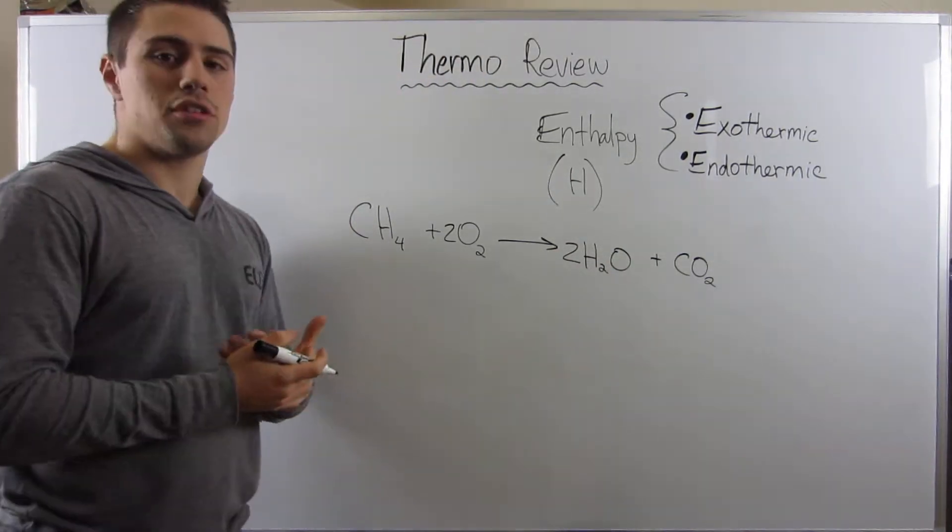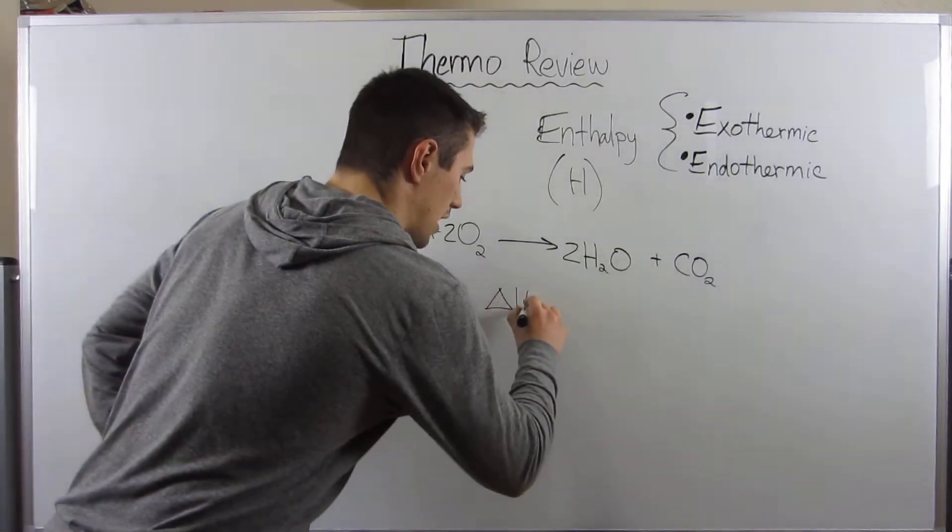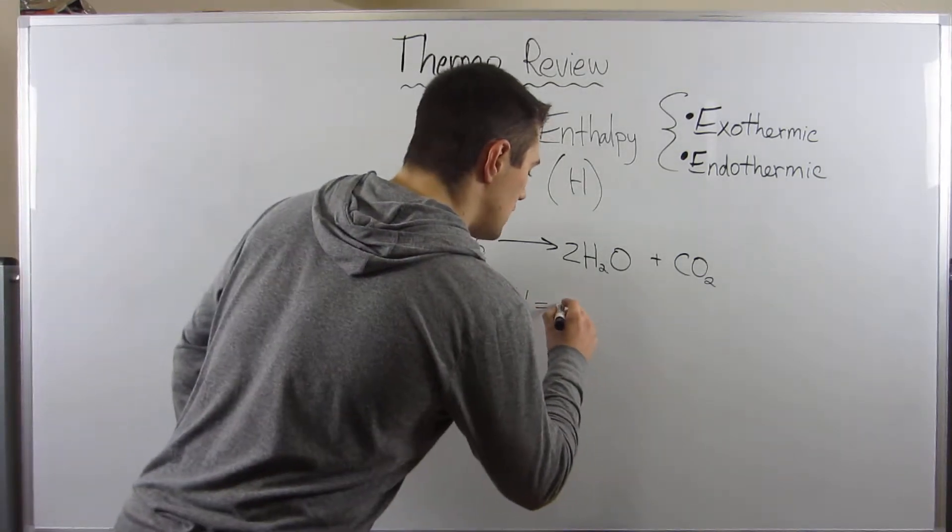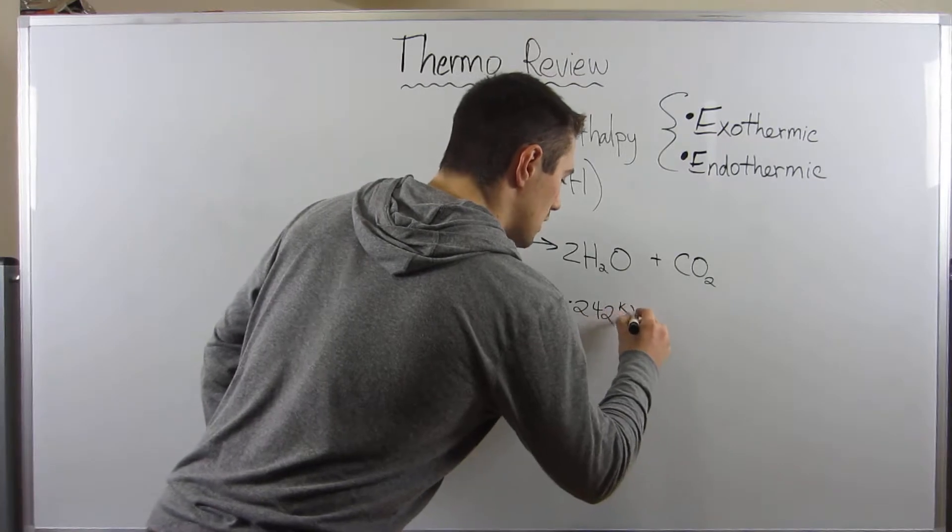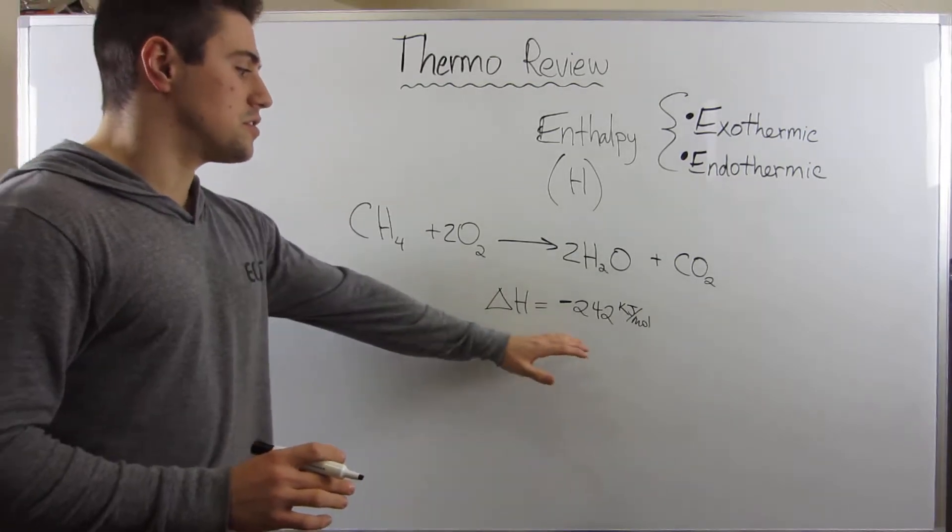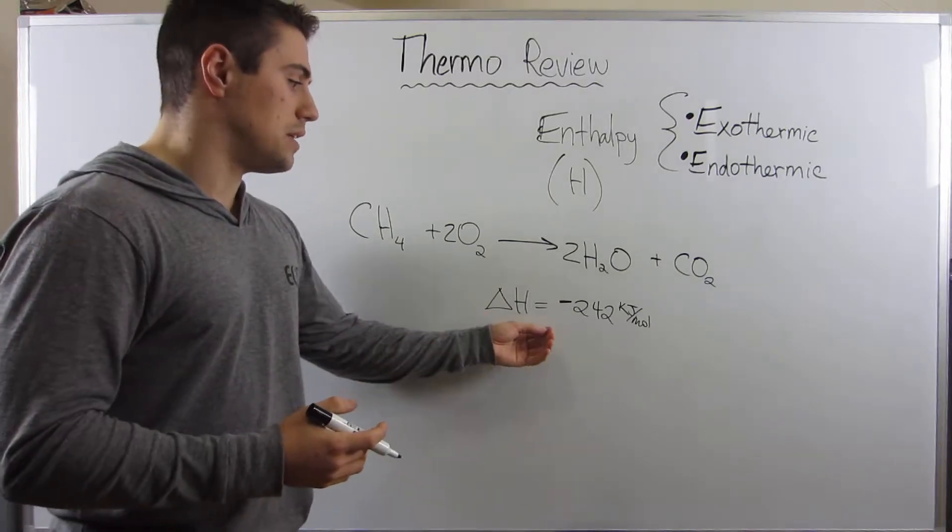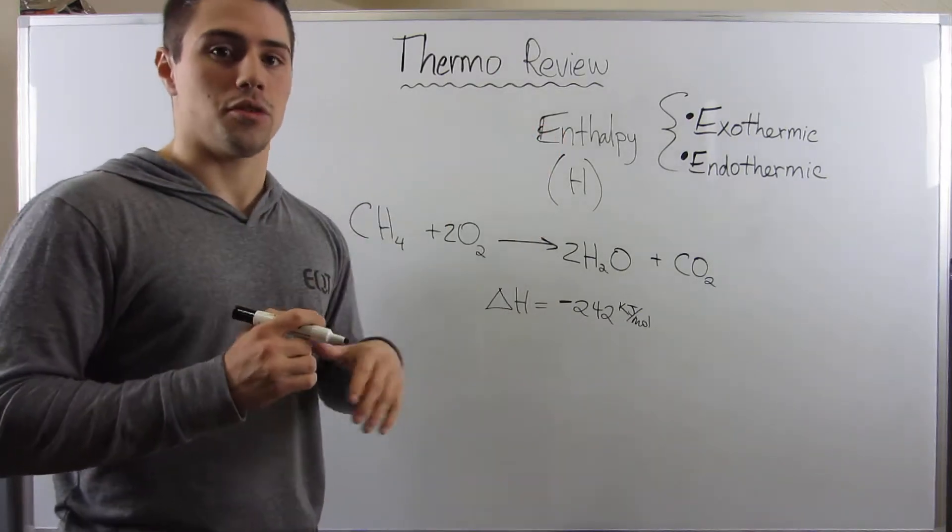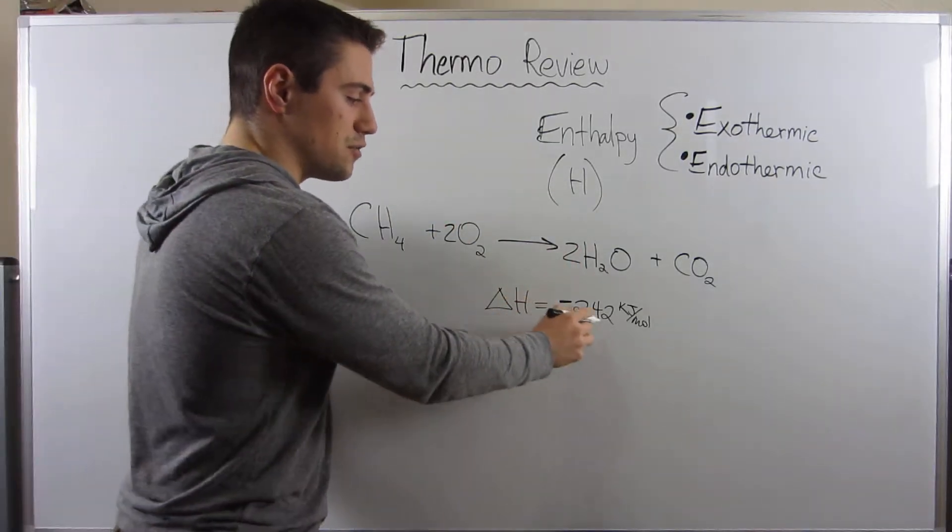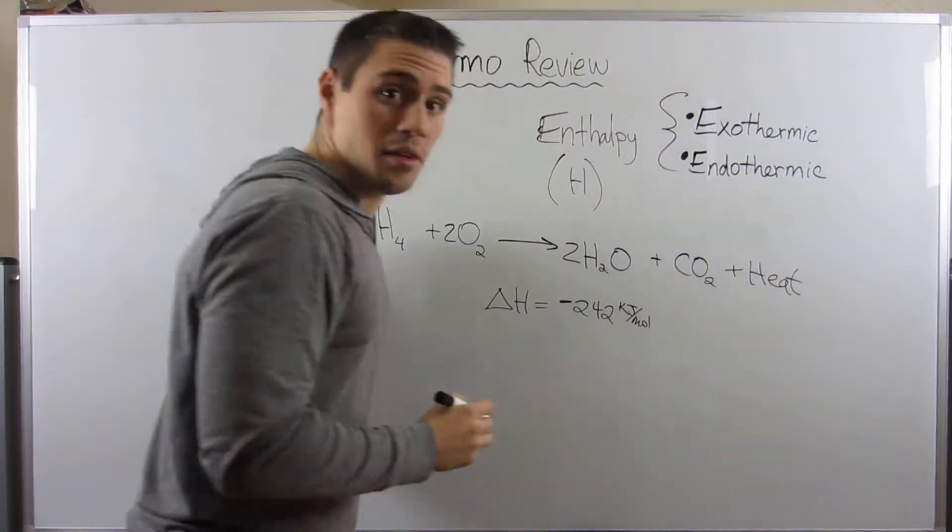Okay, so combustion is a spontaneous reaction. I looked this value up earlier, but the delta H or the enthalpy for this reaction is roughly negative 242 kilojoules per mole. Since the reaction has a negative enthalpy, we know it's exothermic because that means heat is given off to the environment. The reaction system is losing energy. This negative 242 kilojoules per mole is over here, produced as heat. It's a product.